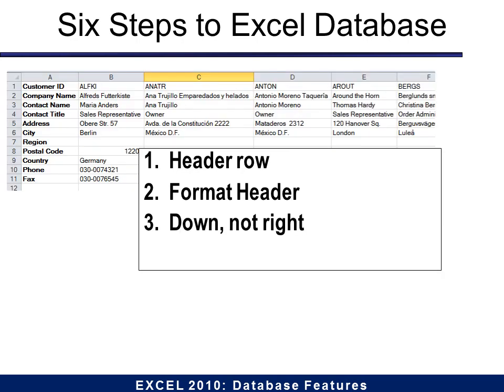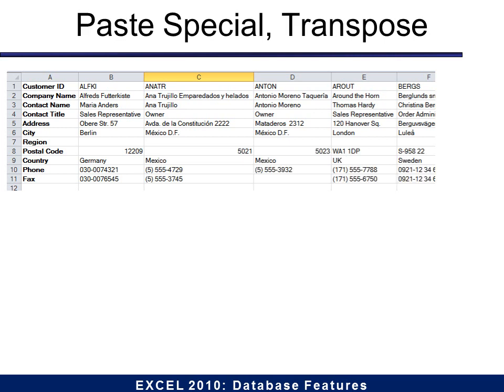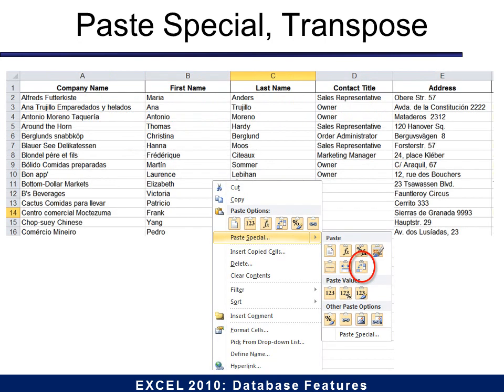Then you want to make sure that your data goes down, not to the right. A lot of times I've seen databases where the headers are on the left and the data moves out to the right. The problem with that is you cannot manipulate it, and you certainly cannot take it into Access. To make it easier, put headers across the top. But what if you've already got your headers in the first column? There's a wonderful tool on the right-mouse click called Paste Special Transpose. You simply copy the data, put your cursor where you want the data to start, right-click, choose Paste Special, and notice the Transpose option. It will automatically put your headers in the first row and all your data going down exactly the way we want a database.